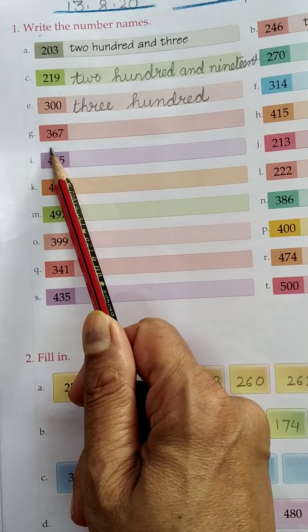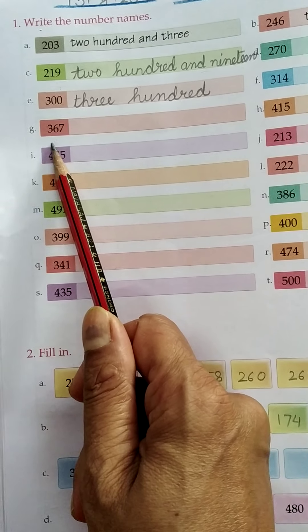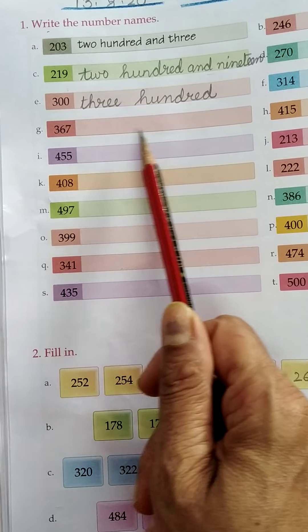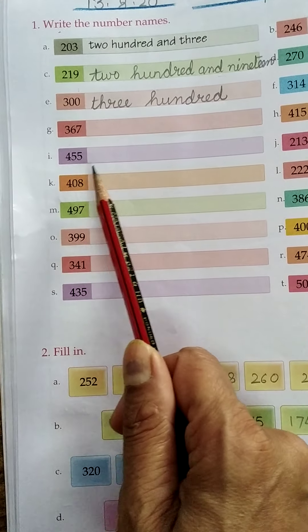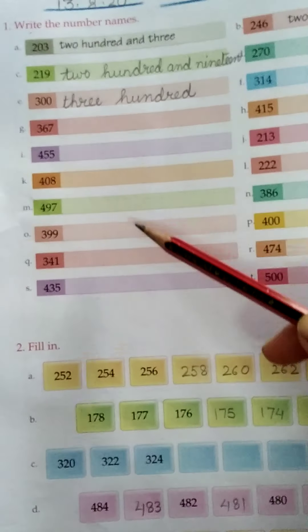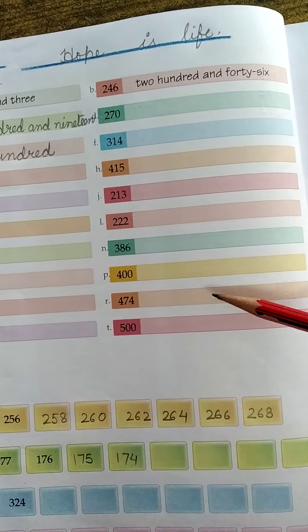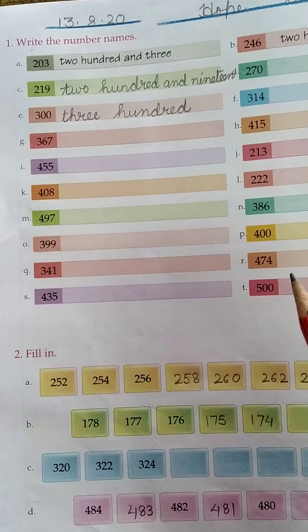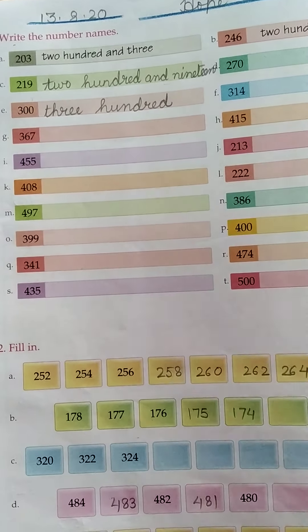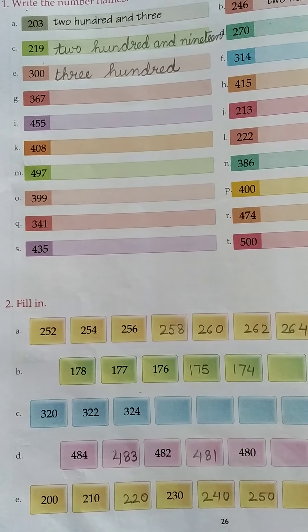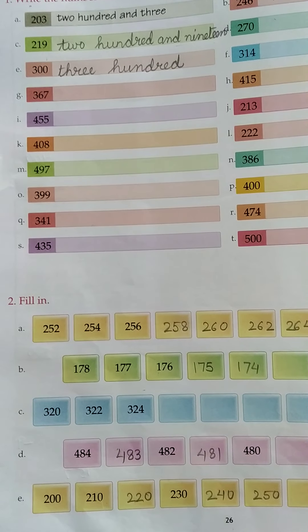In number G, 367. You can write yourself. Then 455. These spellings, you have to write yourself. Everyone write yourself. And write your spelling very neatly and correctly. You have to write the spelling of 100 is correct.